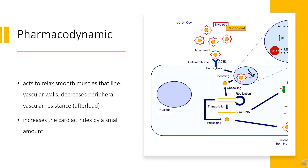Pharmacodynamics: After intravenous administration, amiodarone acts to relax smooth muscles that line vascular walls, decreases peripheral vascular resistance and afterload, and increases the cardiac index by a small amount. Administration by this route also decreases cardiac conduction, preventing and treating arrhythmias. When given orally, however, amiodarone does not lead to significant changes in the left ventricular ejection fraction. Similar to other antiarrhythmic agents, controlled clinical trials do not confirm that oral amiodarone increases survival.